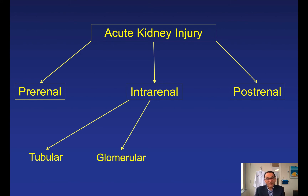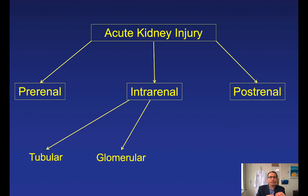Glomerular causes involve acute glomerulonephritis — inflammation of the glomerulus — due to conditions such as lupus, cryoglobulinemia, vasculitis, Goodpasture's disease, and MPGN. Clues include rising creatinine, new hypertension, sub-nephrotic range proteinuria (less than 3–3.5 grams per 24 hours), red blood cell casts or dysmorphic red blood cells, and sometimes hematuria reported by the patient. Early biopsy and nephrology involvement are important, as immunosuppressants are often needed.